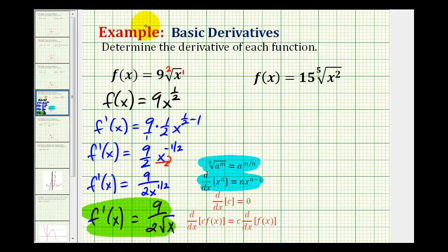Our second example is going to be very similar. We're first going to write this radical in rational exponent form. So, f of x is equal to fifteen times x to the power of two-fifths. Again, the index is the denominator, and the exponent is the numerator.